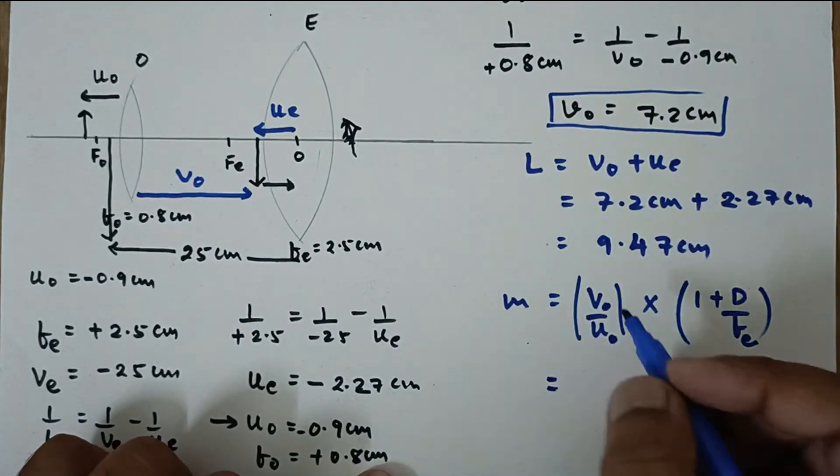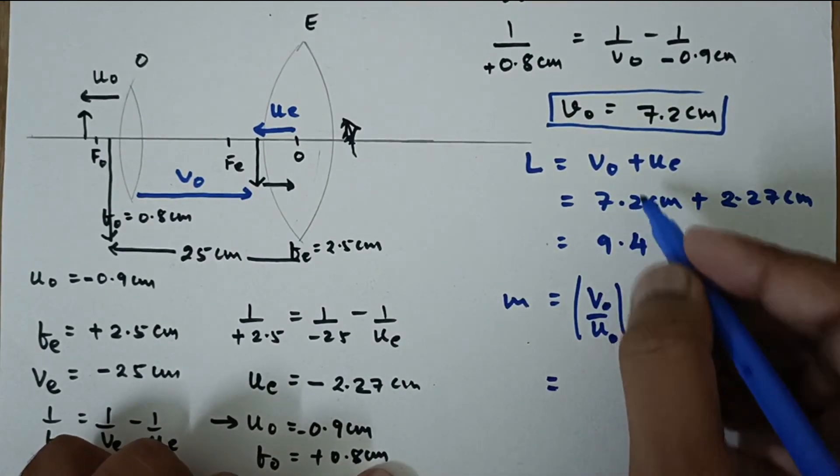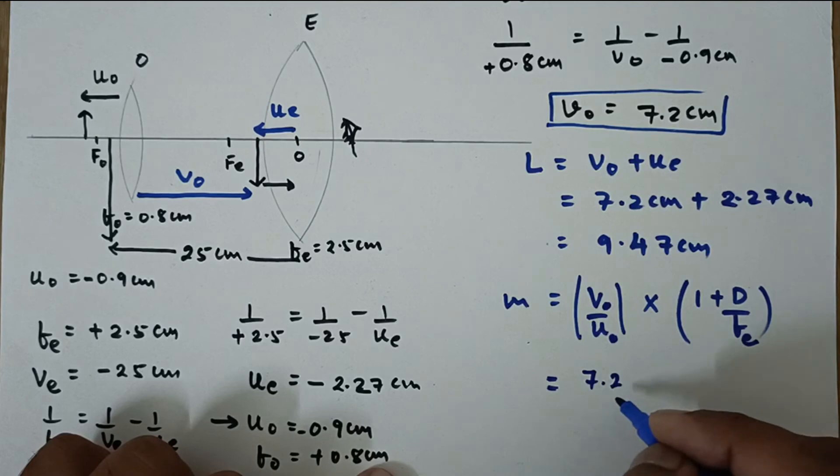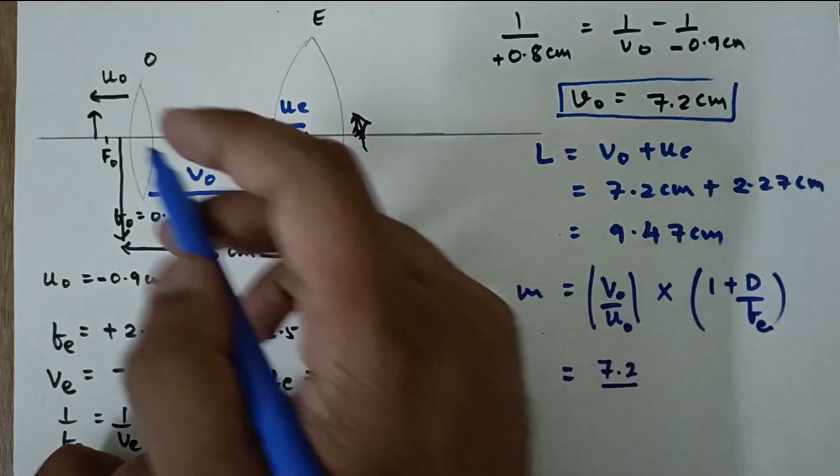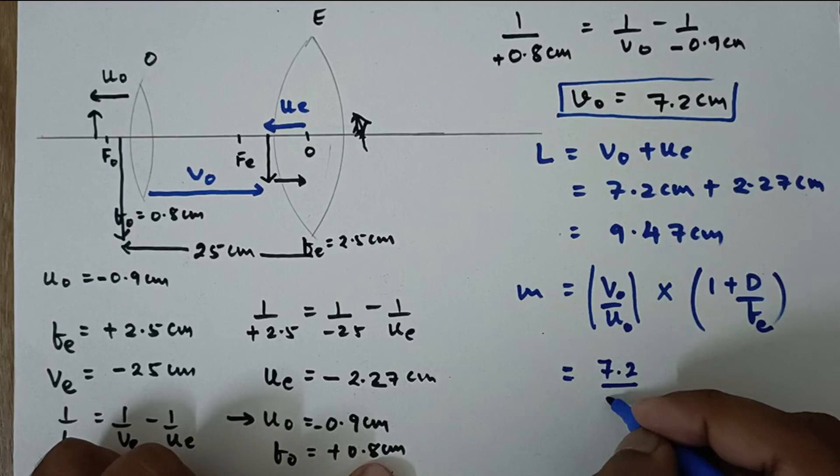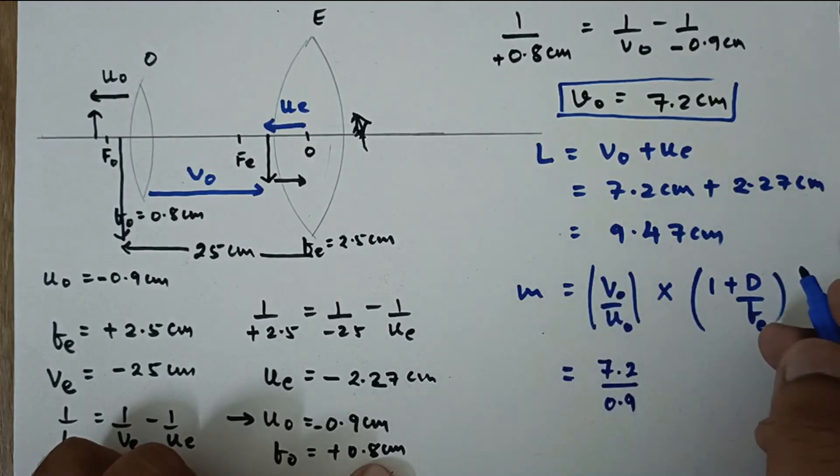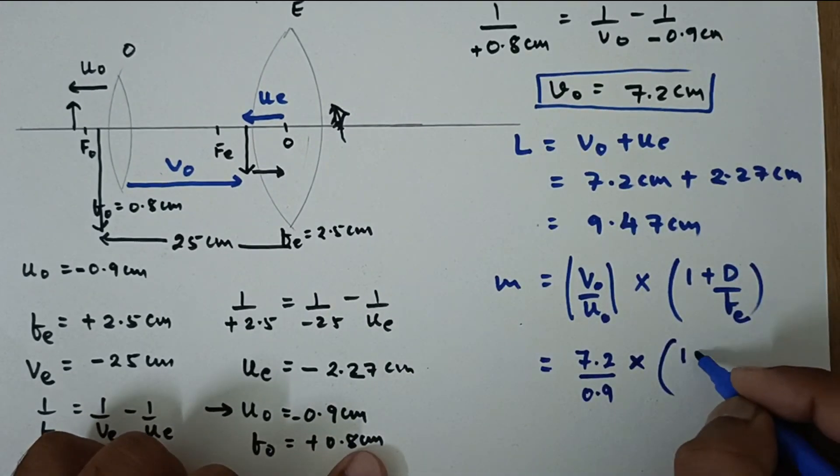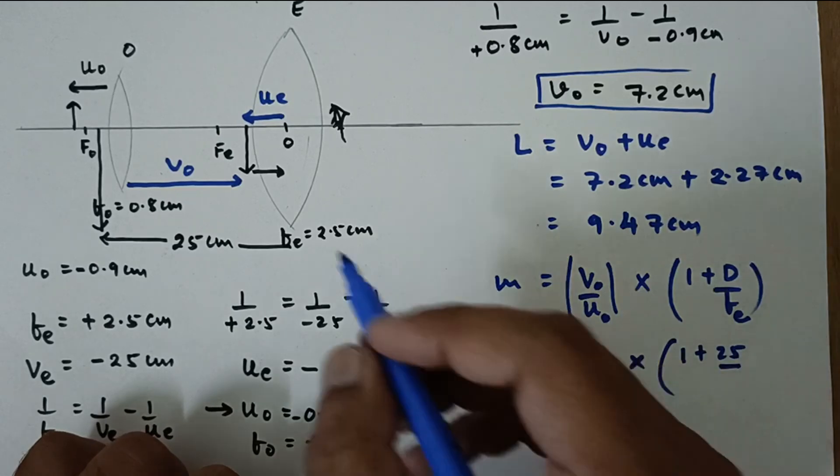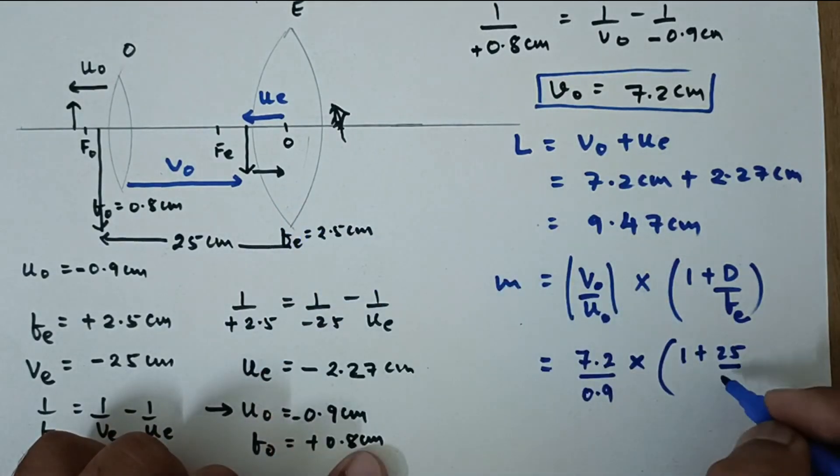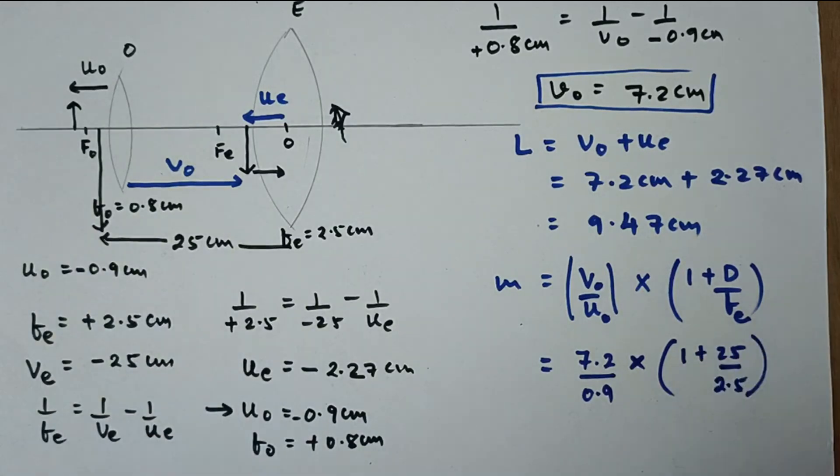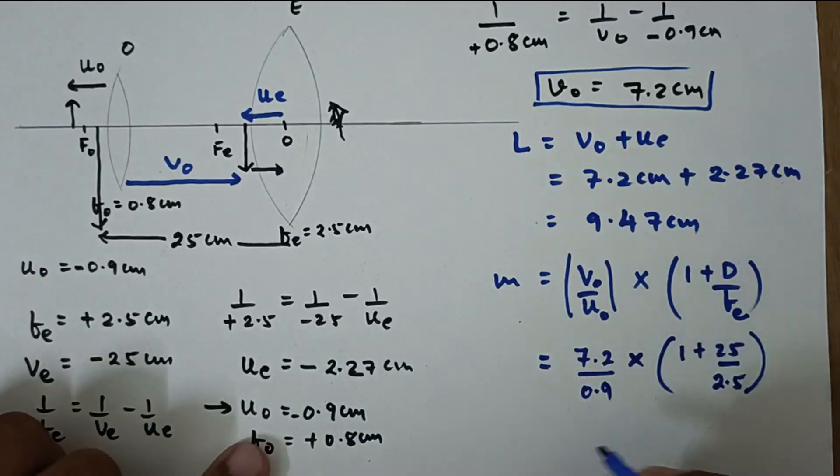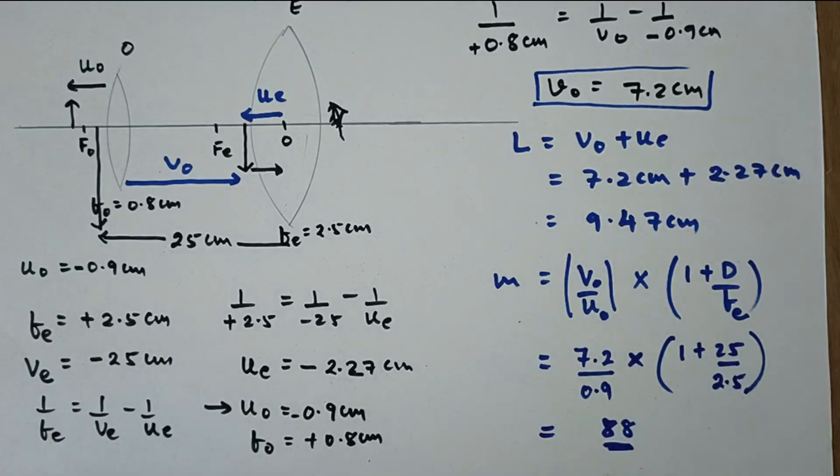So let us substitute the value. VO we just now found out 7.2 and the UO value is already given 0.9. It cannot be negative magnification. So the magnifying power. So it is 1 plus 25 upon FE. Now FE is 2.5. So on solving you will get this value as 88 which is the answer.